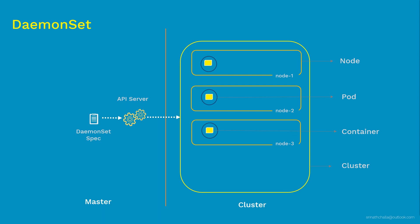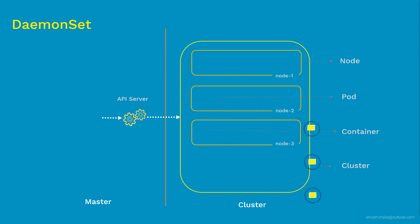DaemonSet can also deploy one pod per subset of nodes — you tag nodes with labels and use those labels inside the DaemonSet manifest file. Nodes are always added and removed from the cluster. When a node is added, the DaemonSet controller on the master node monitors that and deploys the pod on the newly created node. When a node is deleted, the pod is also deleted and garbage collected. To delete DaemonSet pods from every node, all you need to do is delete the DaemonSet itself, and all pods get deleted and disappear.